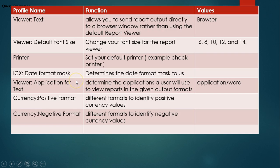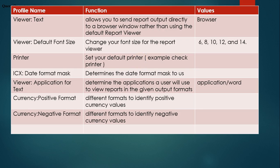Some other useful user profiles: 'Viewer: Text' — if set to browser, the output opens in a browser window instead of the form. 'Viewer: Default Font Size' — lets you set the font size of reports in the viewer; possible values are 6, 8, and so on. 'Printer' — you can set a default printer so you don't have to change it every time you print a check or report.